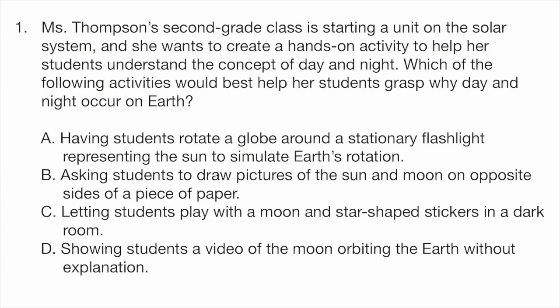A, having students rotate a globe around a stationary flashlight representing the sun to simulate earth's rotation. B, asking students to draw pictures of the sun and moon on opposite sides of a piece of paper. C, letting students play with moon and star-shaped stickers in a dark room. D, showing students a video of the moon orbiting the earth without explanation.